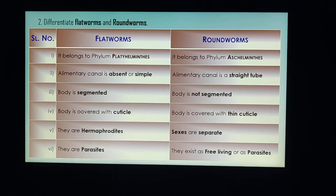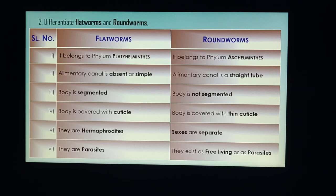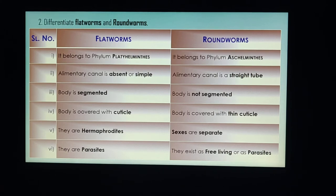In flat worms, the body is segmented, whereas in round worms the body is not segmented. Both are covered with cuticle, but in round worms the cuticle is very thin. Flat worms are hermaphrodites — both male and female reproductive organs are found in the same organism — whereas in round worms the sexes are separate.